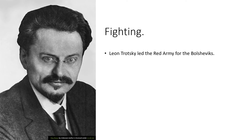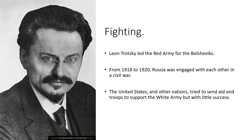Leon Trotsky — this gentleman right here — led the Red Army for the Bolsheviks against the White Army. So the Red Army represented Lenin, and the White Army represented those who opposed him. From 1918 to 1920, Russia was engaged in a civil war between those who supported Lenin and the Soviets and those who were against it. Surprisingly, the United States and other nations tried to send aid and troops to support the White Army.